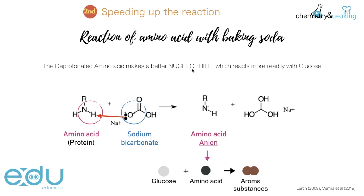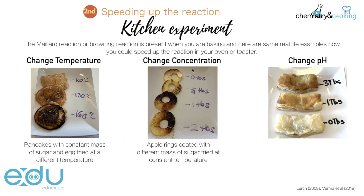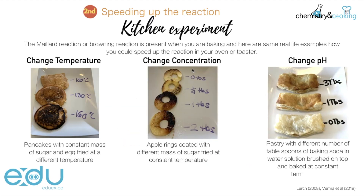In the kitchen again, let's check it out. The last kitchen experiment we're doing is the change in pH. Here we use pastry with different amounts of tablespoons of baking soda in water to form a solution, we brush it on top, and we bake it at constant temperature. Let's do it.